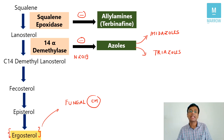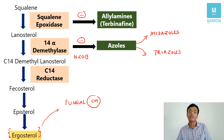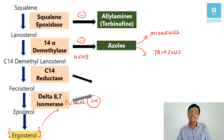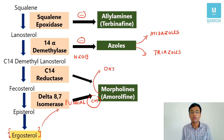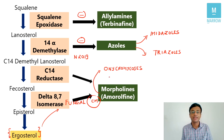Further in the pathway, 14-demethyl lanosterol is converted to fecosterol by C-14 reductase, and fecosterol is converted to episterol by delta-8,7-isomerase. These two enzymes can be sequentially blocked by morpholines, the best example being amorolfine. Amorolfine is regularly used in clinical practice for onychomycosis — fungal infection of the nail — and as asked in NEET 2020, the formulation used is called a nail lacquer.